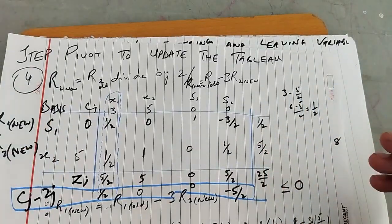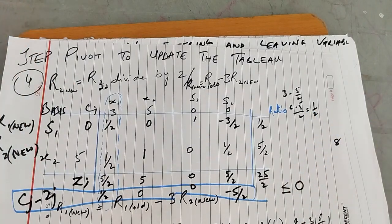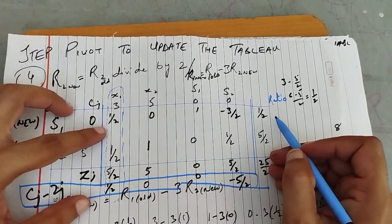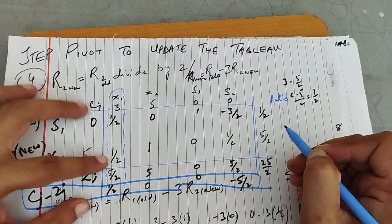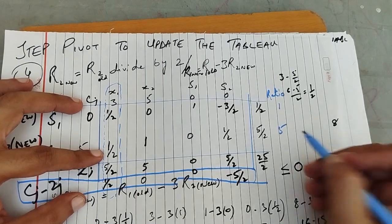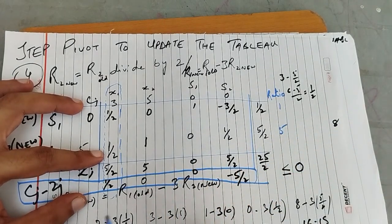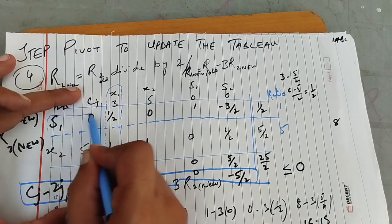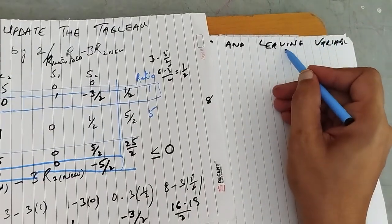Next, we have to find the ratio so that we can find the leaving value. To find the ratio, we divide: 1/2 divided by 1/2 equals 1, and 5/2 divided by 1/2 equals 5. The smallest ratio is 1, so this row is our pivot row, and S1 would be our leaving variable.